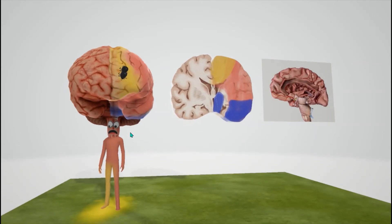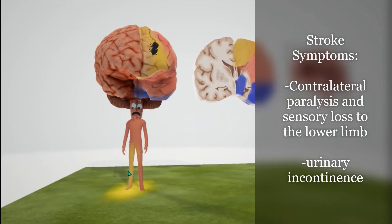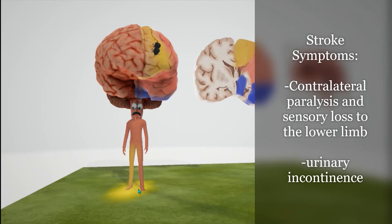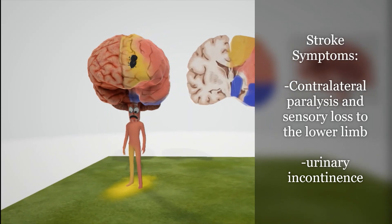A stroke of the anterior cerebral artery would cause contralateral paralysis and sensory loss of the lower limb. He's very sad because he can't feel his leg and he can't move his leg. We also note that he urinated on the floor because urinary incontinence is also associated with an anterior cerebral artery stroke.